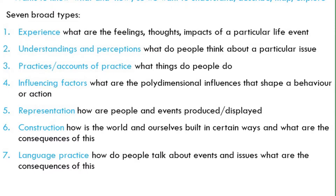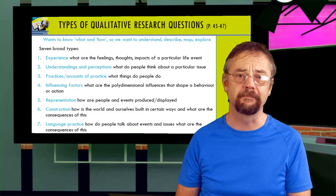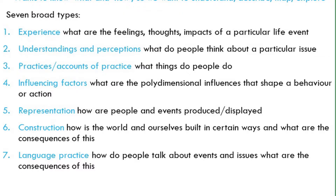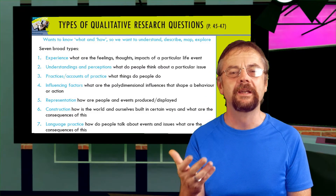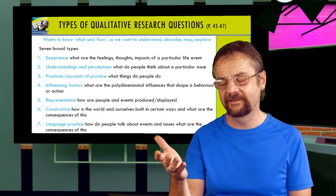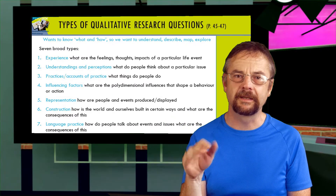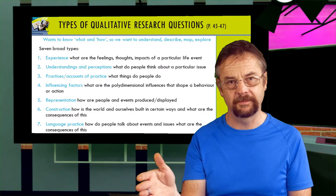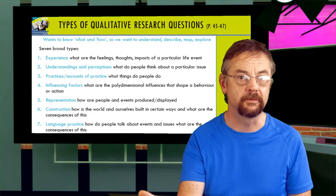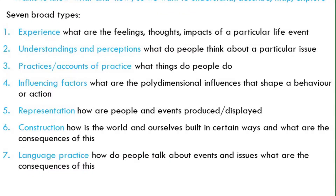Type 5, representation — for example, 'What does it mean to be a student with poor mental health?' Type 6, construction — this is about how people construct meaning. An example would be asking someone, 'How do students understand mental health?' This is similar to understanding, but this time it's about other people's understanding rather than the participant's own understanding. That's why you're asking 'how do people think about it' rather than 'how do you think about it.' Number 7, language practice — an example would be, 'How do students talk about mental health?'